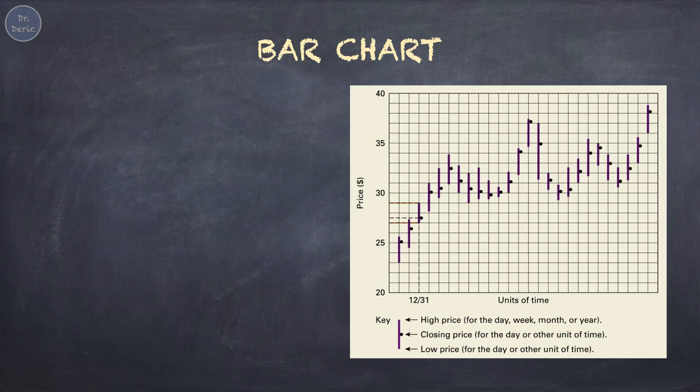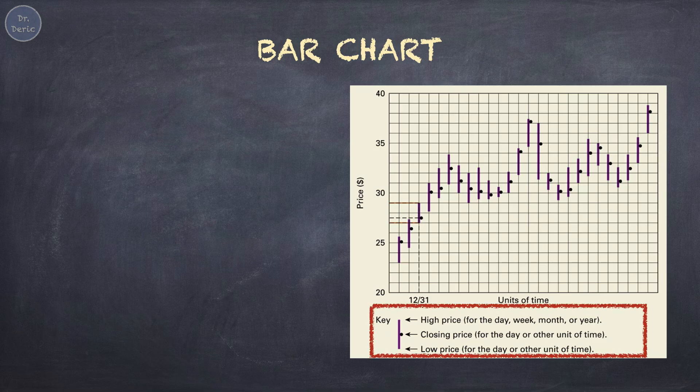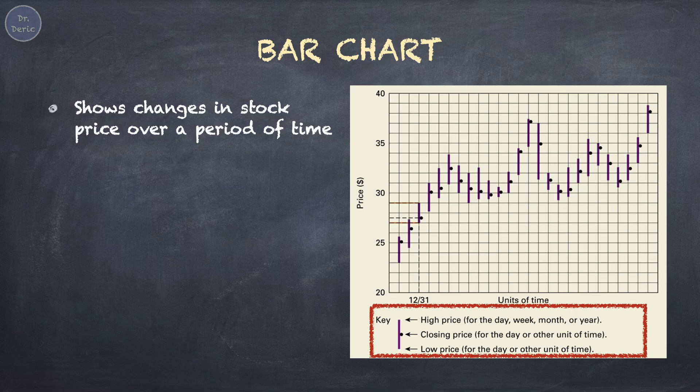Next, Bar Charts. Daily share price will be going up and down every moment. The top of the price bar represents the highest price, the bottom of the price bar is the lowest price, while the dot on the price bar is the closing price for the day. By drawing the price bars for a period of time, we will get a bar chart. A bar chart shows the changes in stock price over a period of time.